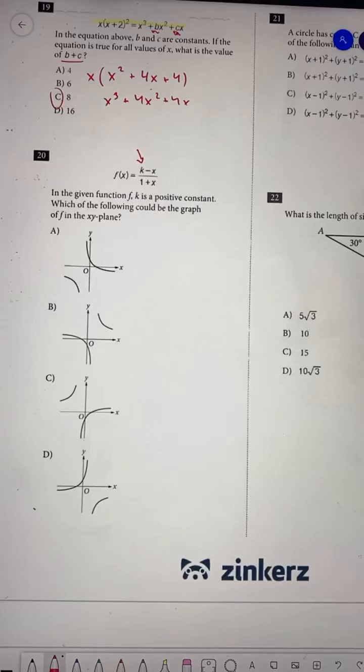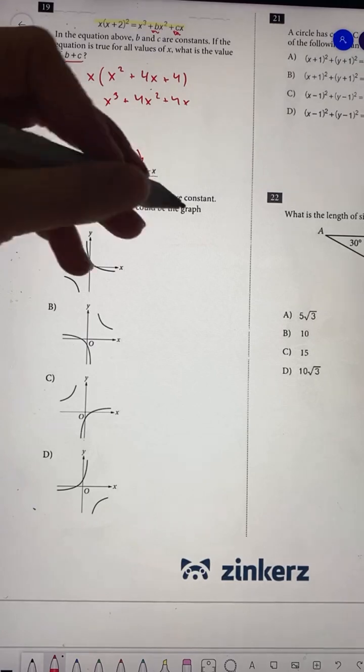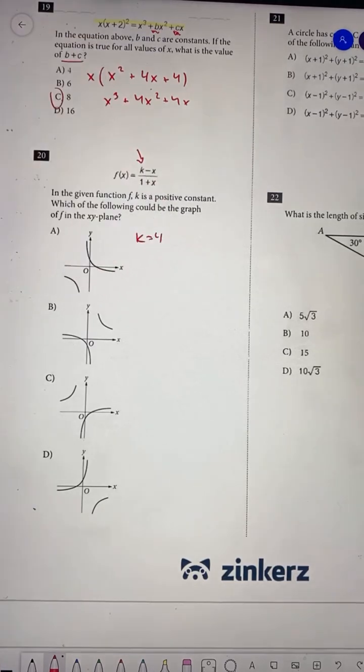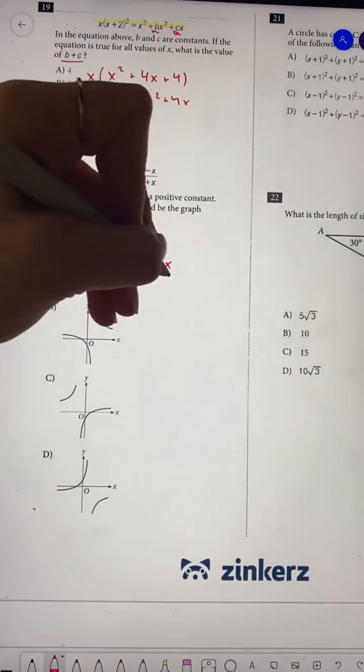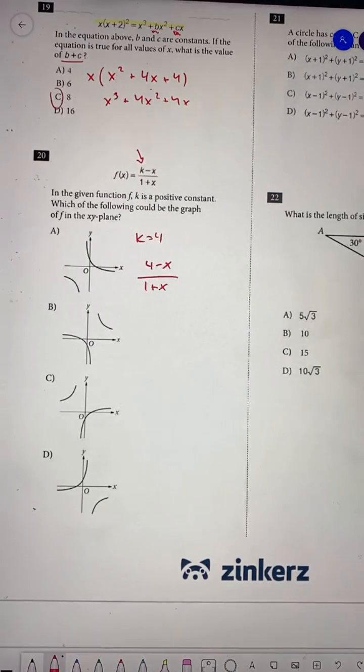They're telling us that that's a positive constant, so we also need to pick a value for k. Let's start with that. Pick something easy. As long as it's positive, you're good to go. I'm going to say that k is equal to 4. So now my equation becomes 4 minus x over 1 plus x. And now I'm going to start plugging in values for x.